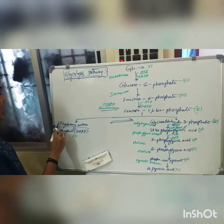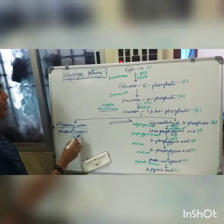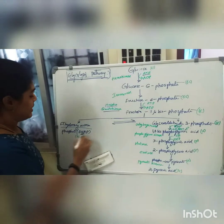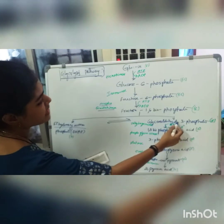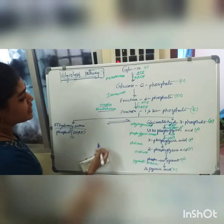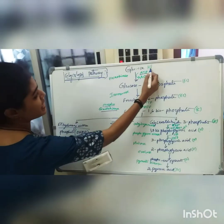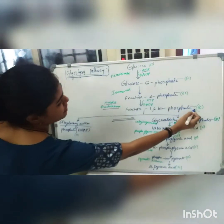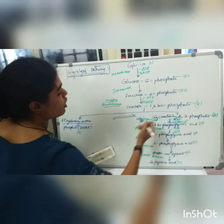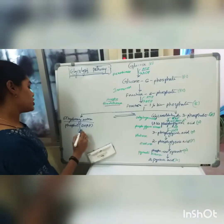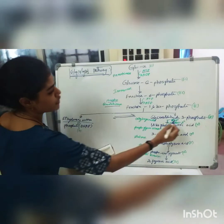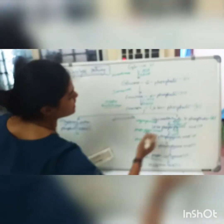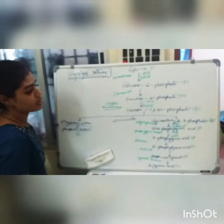The two molecules produced are dihydroxyacetone phosphate (DHAP) and glyceraldehyde 3-phosphate. The 6-carbon molecule is split into two 3-carbon molecules.